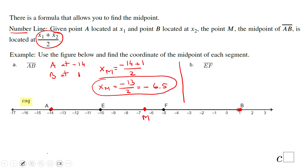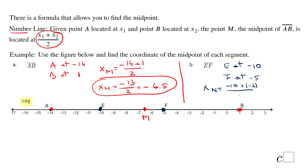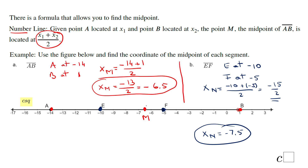Now let's find the midpoint of segment EF. Point E is at negative 10, and point F is at negative 5. Using the same formula, x sub N equals negative 10 plus negative 5 over 2, which gives us negative 15 over 2, or negative 7.5. That's a good answer — it makes sense on the number line.